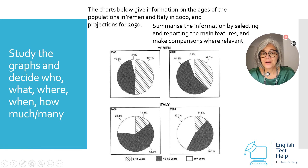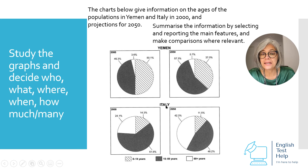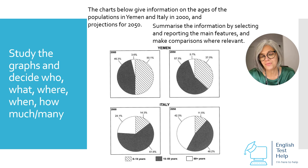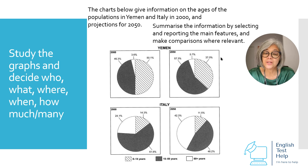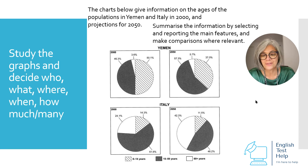The charts below give information on the ages of the populations in Yemen and Italy in 2000 and projections for 2050. Summarise the information by selecting and reporting the main features and making comparisons where relevant.